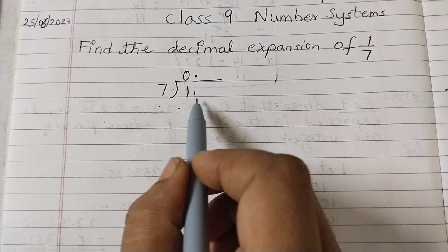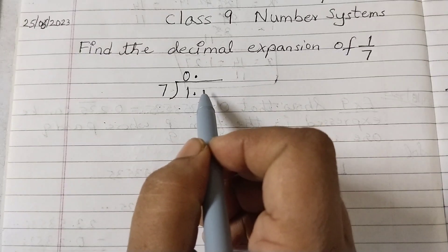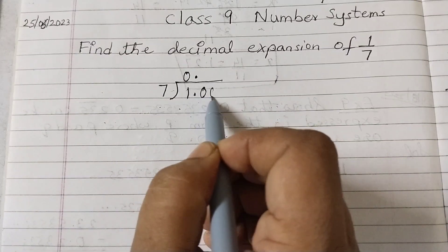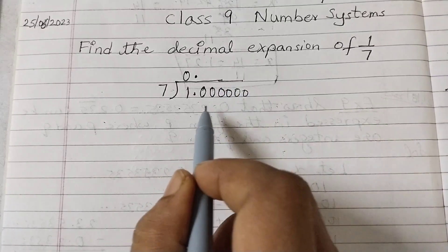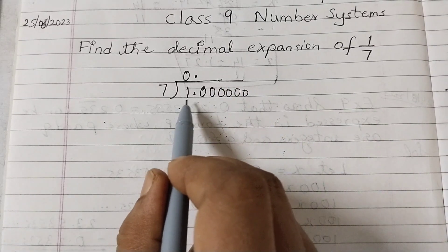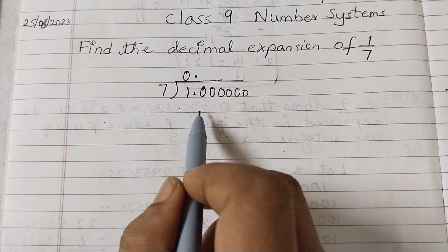Then you can put as many zeros as you want after the decimal point. This you need not show, you can just put it as 1.0 and start the division.